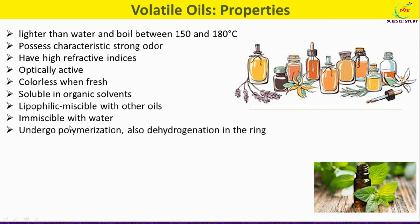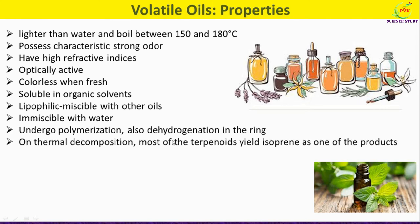Volatile oils undergo polymerization, and dehydrogenation also occurs in the ring. On thermal decomposition, most of the terpenoids or volatile oils yield isoprene as one of the products. This chemical reaction shows that terpenoids or volatile oils, when heat is applied, are converted into isoprene, whose molecular formula is C5H8.